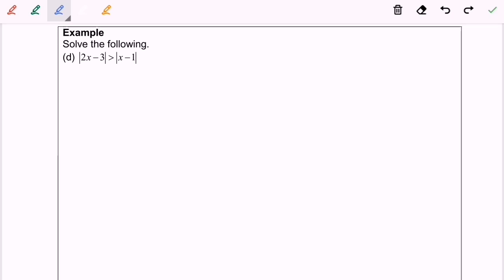Hello everyone, so now I'm going to solve question D. Based on the definition, we will have square root of 2x minus 3 square.